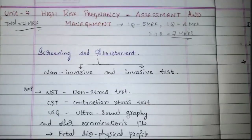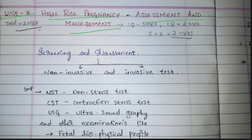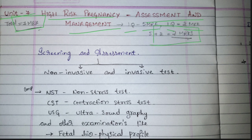Hello guys, welcome back to the channel. Today we are going to see Unit 7, that is high risk pregnancy assessment and management — what are the risk factors related to pregnancies, how we are going to assess them, how we can find them, and how we can manage them. From this chapter you will get seven marks totally.